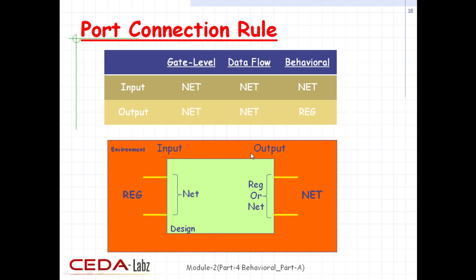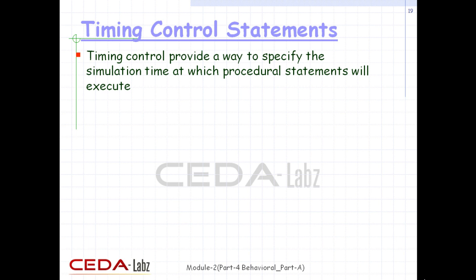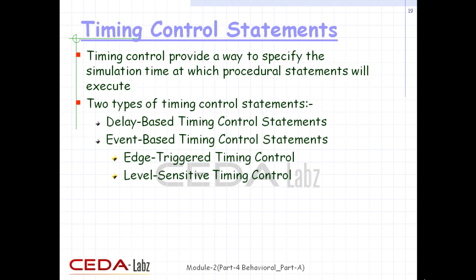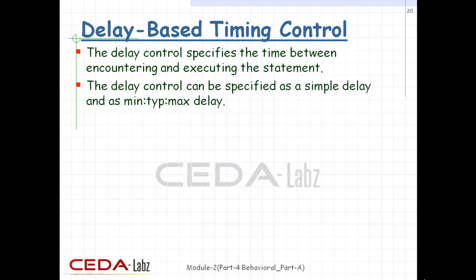The internal block represents the main module or design block where we write our desired logic, and the external block represents the test bench environment. Various behavioral timing control constructs are available in Verilog. If there are no timing control statements, the simulation time does not advance. Timing controls provide a way to specify the simulation time at which procedural statements will execute. There are two methods: delay-based timing control and event-based timing control. Delay-based timing control specifies the time duration between when the statement is encountered and when it is executed.